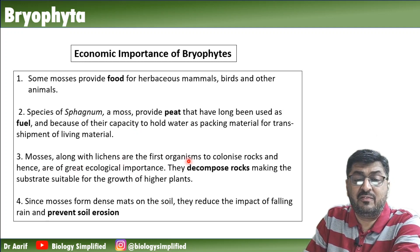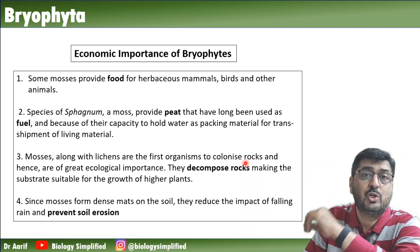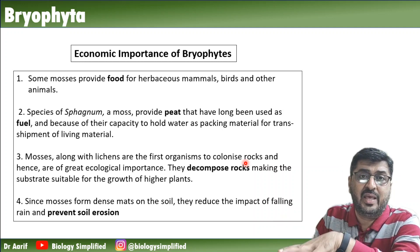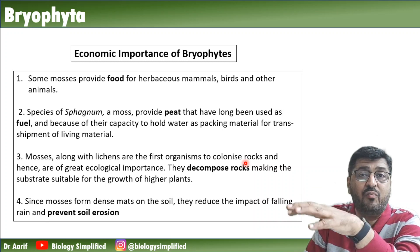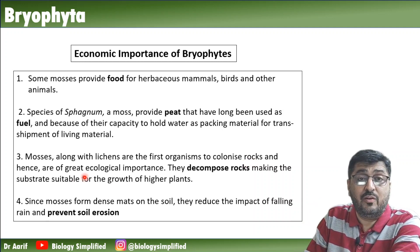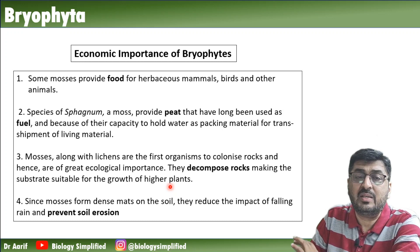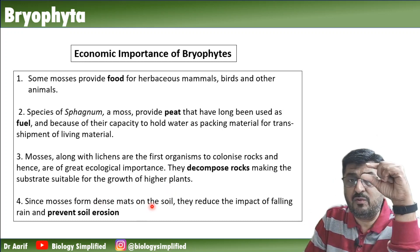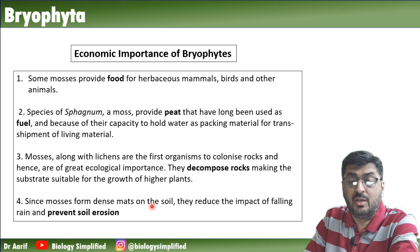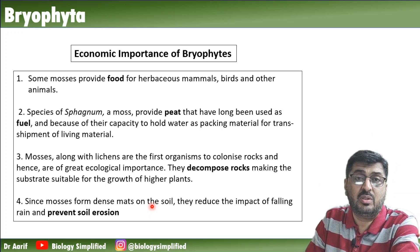Mosses along with lichens are the first organisms to colonize rocks - this is related to ecology and primary succession. Lichens develop first, then the first bryophytes develop on top of lichens. Mosses and lichens decompose rock making the substrate suitable for growth of higher plants. Mosses also form dense mats on the soil, preventing soil erosion by reducing the impact of falling rain.